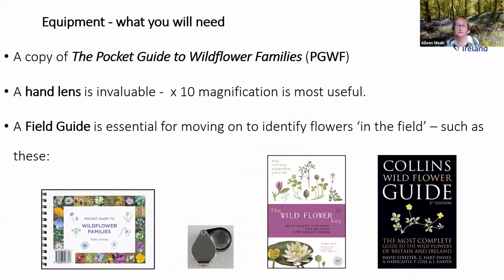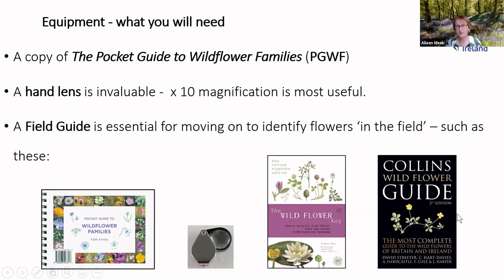The equipment required is not a great deal. The pocket guide you can take with you. A hand lens is invaluable — times 10 magnification is the most useful, and these can be ordered online very easily and are not very expensive. A field guide is essential for moving on to identify flowers in the field, such as the two illustrated here. We recommend guides that use keys to guide you through the identification process rather than just matching a plant to a picture. Of these two, the Collins guide would be our favourite choice as it is the most up-to-date and reflects recent name changes in wildflowers.